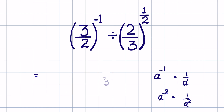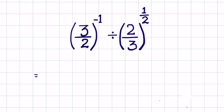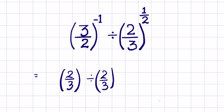So 3 upon 2 raised to the power of minus 1 becomes 2 upon 3, and we now have 2 upon 3 raised to the power of 1 divided by 2 upon 3 raised to the power of 1 upon 2. There is an identity: if a raised to the power m divided by a raised to the power n, this is equal to a raised to the power m minus n.